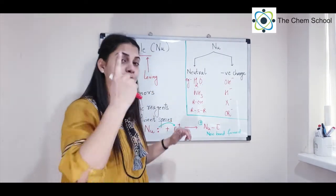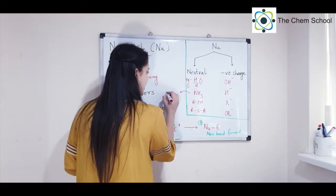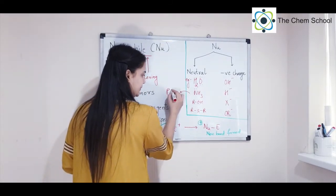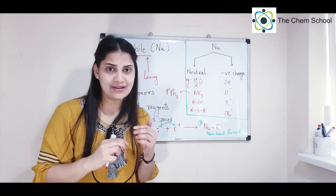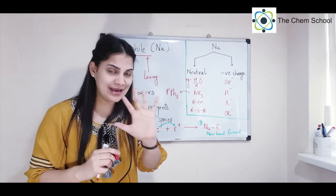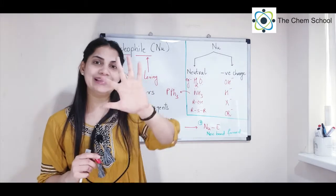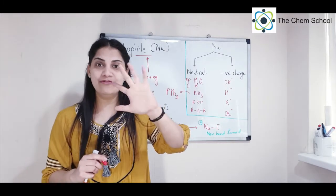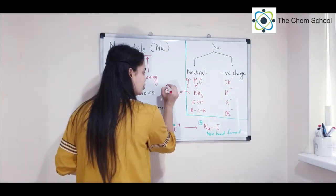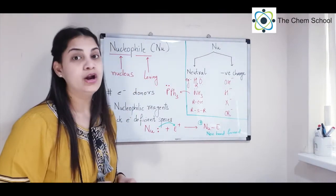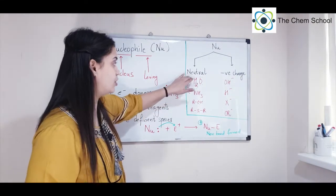Sulfides also have sulfur with two lone pairs, out of which one can be donated. Another example is PPh₃ — triphenylphosphine — where phosphorus is pentavalent with five electrons in the outermost shell, sharing three with the phenyl rings, leaving one lone pair available to donate. So phosphines are also neutral nucleophiles.